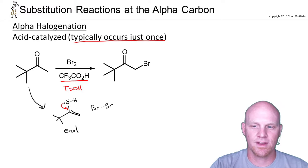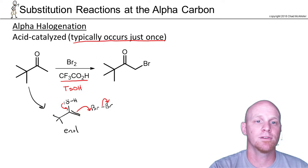And again, these electrons come down, freeing these up to come making the new bond to a bromine, allowing the old bromine-bromine bond to break.